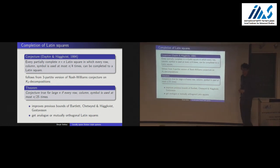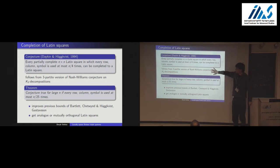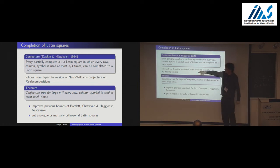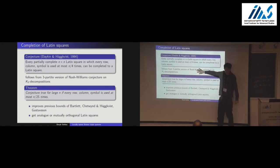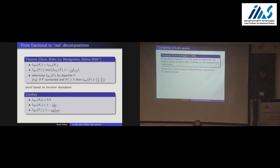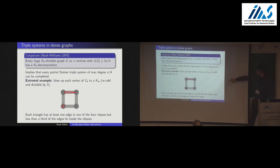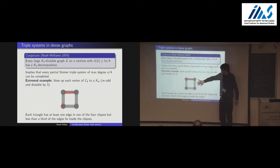Thank you very much. [Q&A] The N/4 bound comes from the Nash-Williams conjecture where the minimum degree is 3/4: you can define a tripartite graph with a similar flavor to the extremal example, and that's where the N/4 comes from.